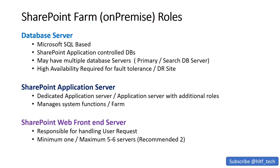A minimum of one web front-end server is required for farm deployment. An all-in-one server configuration exists but is only for development purposes, not production environments. The maximum recommended is five to six servers, with two web front-end servers being the recommended number. Two web front-end servers are sufficient to handle thousands of requests per minute — distributing 1,000 requests means approximately 500 per server. Adding a second web front-end server reduces the load on the first by 50 percent.